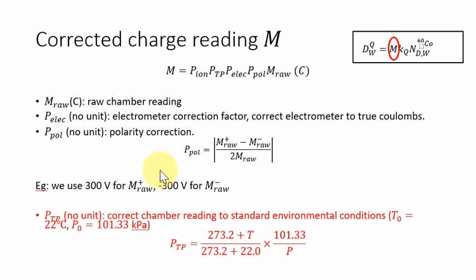PTP is calculated by this equation. Basically, as we just mentioned, it corrects the chamber raw reading on any temperature and pressure condition of the day of the TG51 measurement back to standard environmental condition, which is temperature equals 22 Celsius degrees and pressure equals 101.3 kPa. The correction factor is calculated by this equation.